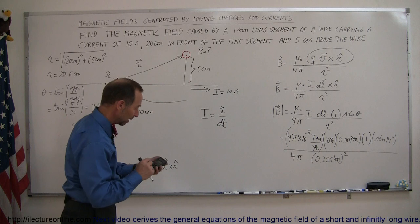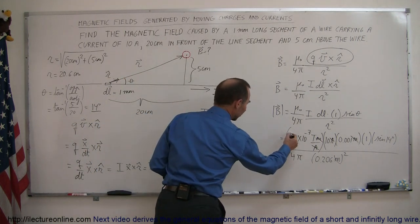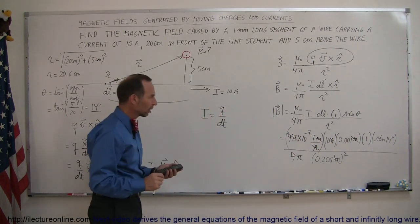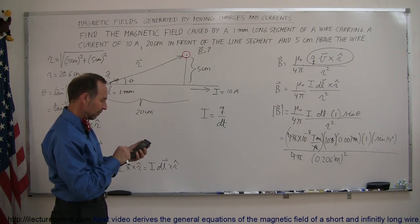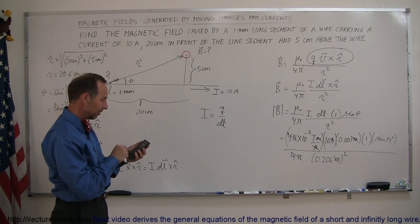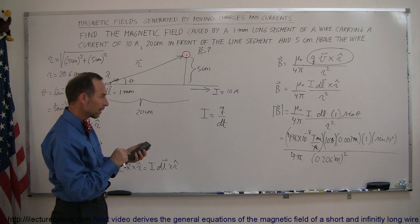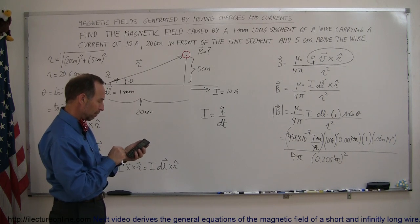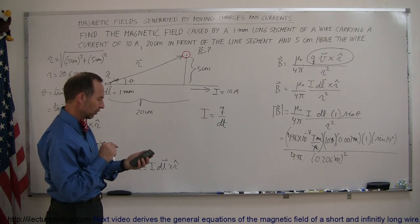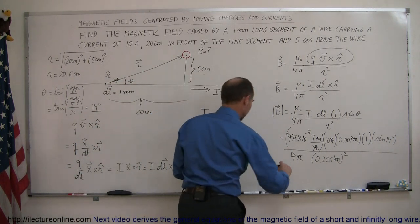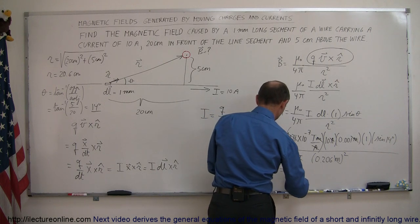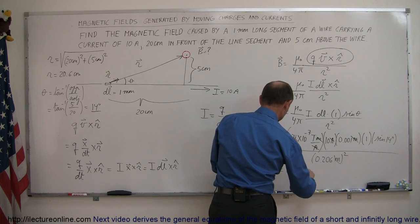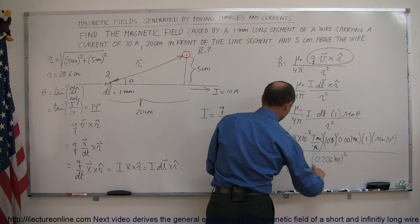Working out the calculation with 4π cancelled: 10⁻⁷ times 10 amps, times 0.001, times sine of 14 degrees, divided by 0.206 squared. The magnetic field caused by that little line segment is equal to 5.7 × 10⁻⁹ teslas.